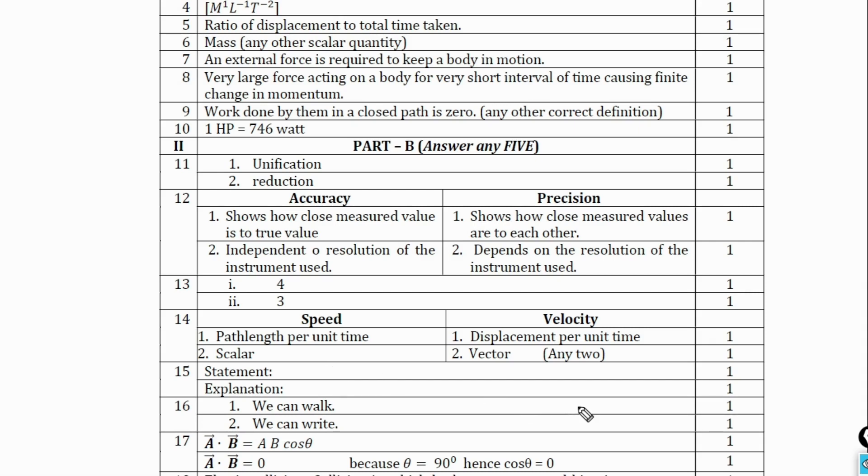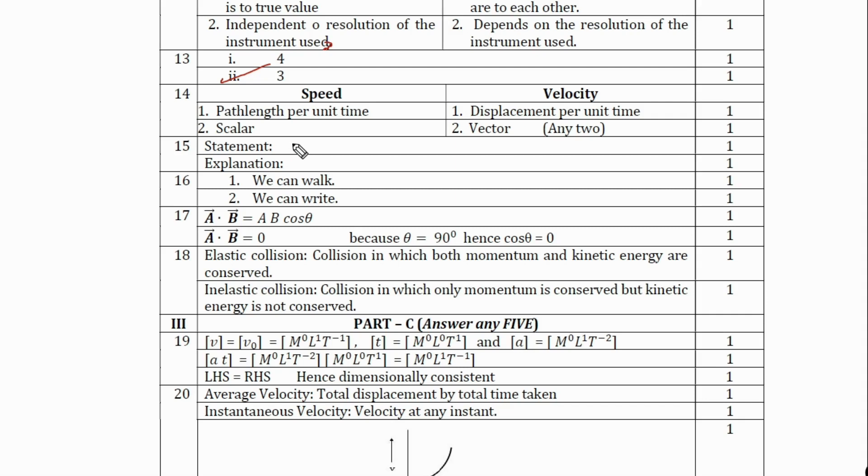Question number 14, statement carries one mark. Explanation will carry another mark. If two vectors are represented by adjacent sides of a parallelogram, then the resultant will be represented by the diagonal starting from the common origin. Since the explanation will carry only one mark, draw the diagram. Vector A, Vector B, and resultant Vector R equals Vector A plus Vector B. The diagram and mathematical expression is important, it will carry one mark.